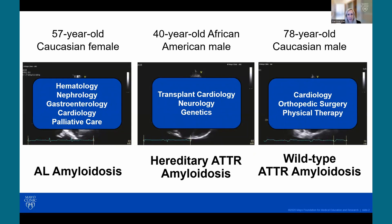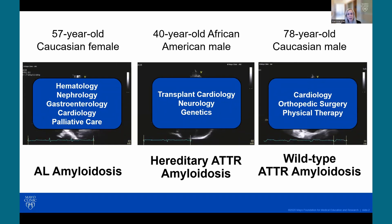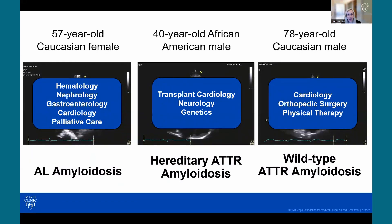The AL amyloid patient was evaluated by hematology, nephrology, gastroenterology, and palliative care. The hereditary TTR patient was also evaluated by neurology and our genetics team. The wild-type TTR patient had been evaluated by orthopedic surgery and physical therapy, given multiple other musculoskeletal complaints. This really highlights the role of multiple subspecialists working together to provide comprehensive and cohesive care for these patients.